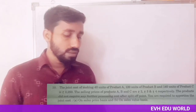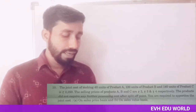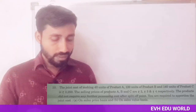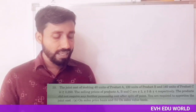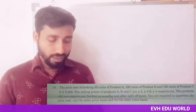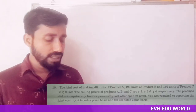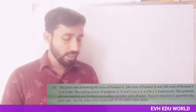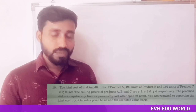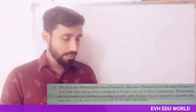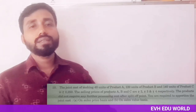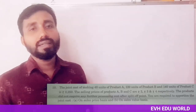The selling prices of products A, B and C are 2, 3 and 4 respectively. The products did not require any further processing cost after the split-off point. You are required to apportion the joint cost — the first one on the basis of sales price, and the second on the basis of sales value.